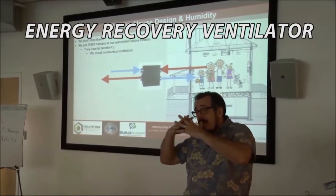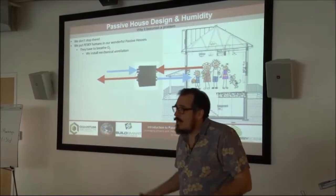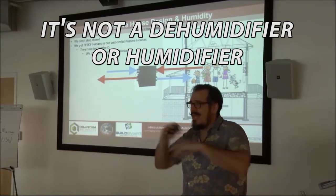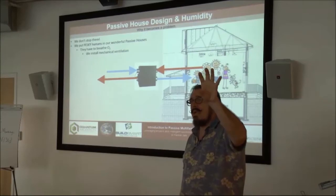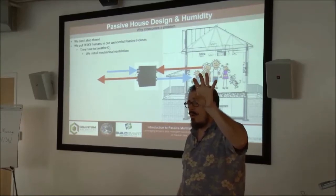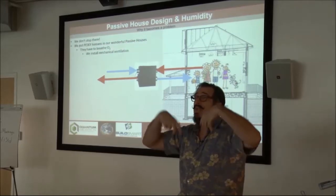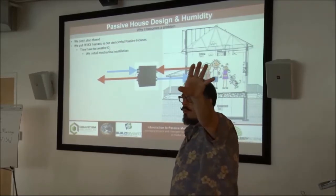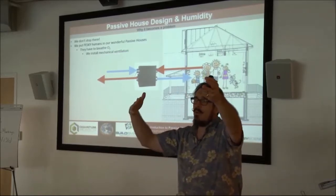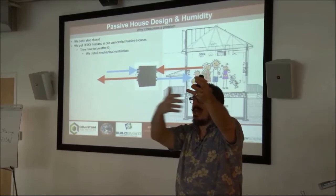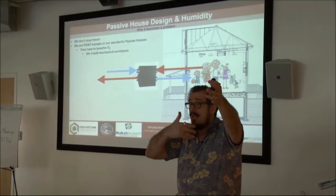An energy recovery ventilator — an ERV — is an enthalpy-type device that exchanges not only sensible heat but also latent heat, meaning moisture. It's not a dehumidifier or humidifier — don't think of it that way. What it does is move moisture from whichever air stream has a greater concentration of absolute moisture into the stream with less. So in wintertime, cold dry air is outside and warm moist air is inside — some of that outgoing moisture transfers into the incoming air, keeping it less dry than if you used a plain HRV.